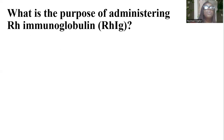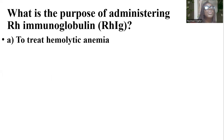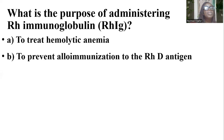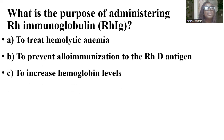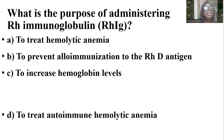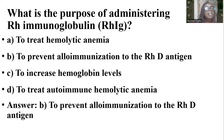What is the purpose of administering RHD immunoglobulin? Options are: to treat hemolytic anemia; to prevent alloimmunization to the RHD antigen; to increase hemoglobin levels; to treat autoimmune hemolytic anemia. And the answer is B — to prevent alloimmunization to the RHD antigen.